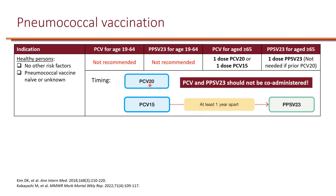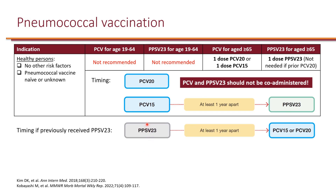If someone gets PCV20, there is no need for PPSV23, since most of PPSV23 serotypes are covered and PCV is generally a better vaccine. If someone gets PCV15, they wait one year and then get one dose of PPSV23. If someone had already received PPSV23 and has not yet received a PCV, it is recommended to wait at least one year after their PPSV23, then get either PCV15 or PCV20. After receiving PCV20 in this scenario, no further PPSV23 is needed.